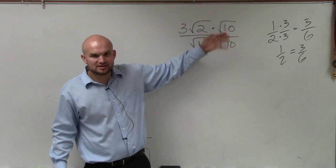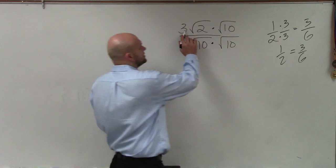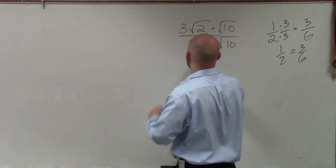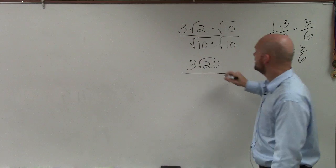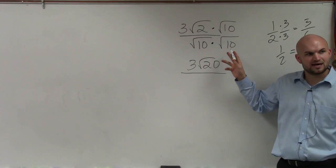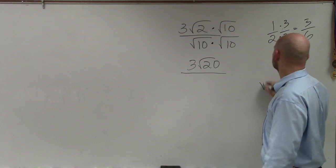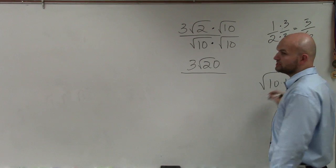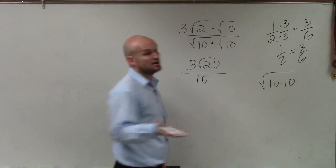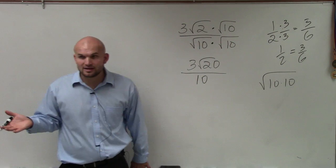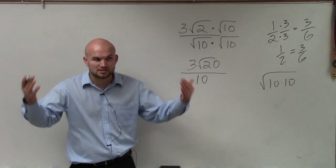So what happens when I multiply by the square root of 10 over 10? Here, I can multiply these two. That becomes square root of 20. And then the square root of 10 times the square root of 10 is the same thing as the square root of 10 times 10, which we just know is the number 10, which is the square root of 100. That's correct. It's the square root of 100, which is 10.